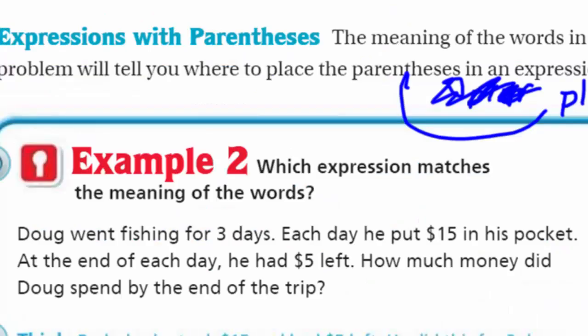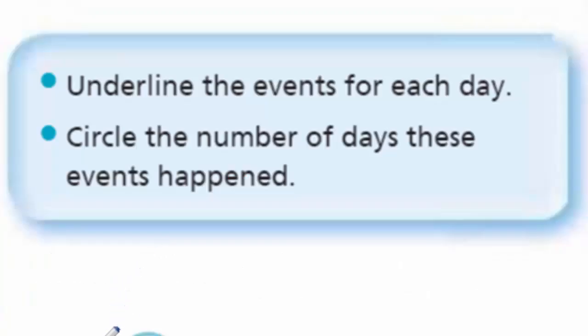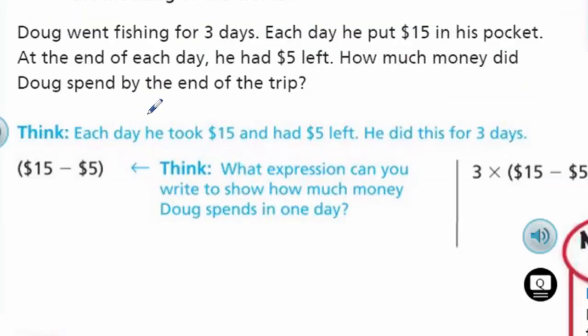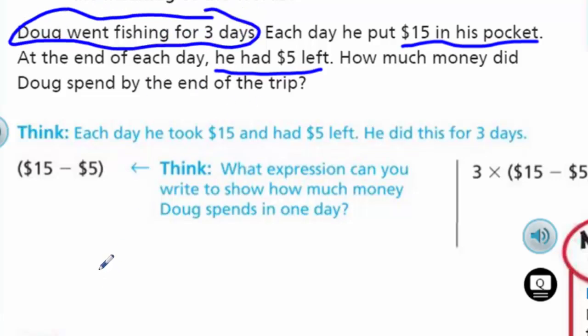Now, Example 2: Which expression matches the meaning of the words? It says over here in the blue shaded box, underline the events of each day. Also says circle the number of days these events happen. So let's read this first. Doug went fishing for 3 days. Each day he put $15 in his pocket. At the end of each day he had $5 left. How much money did Doug spend by the end of the trip? So we need to underline the events of each day. Each day he put $15 in his pocket. At the end of each day he had $5 left. And circle the number of days, which is 3 days.